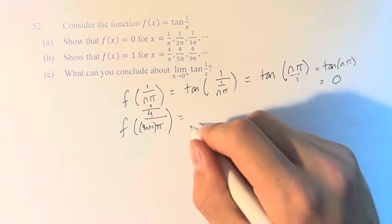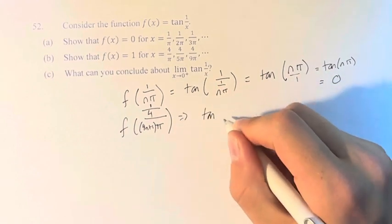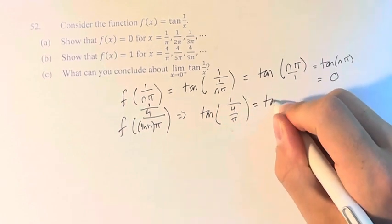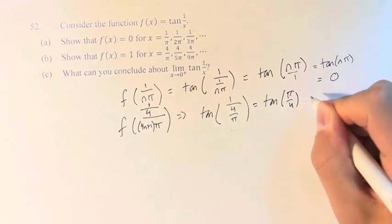So just for example, tan(1/(4/π)). This is tan(π/4), which we know is 1.